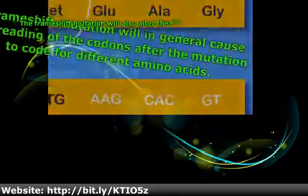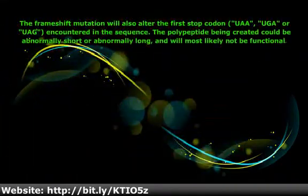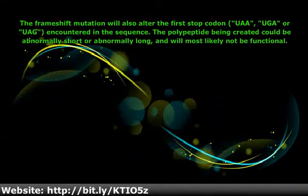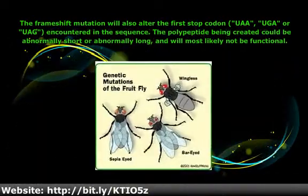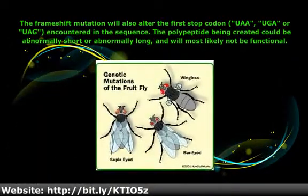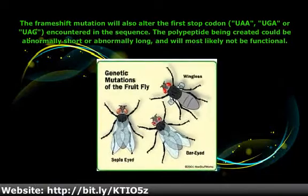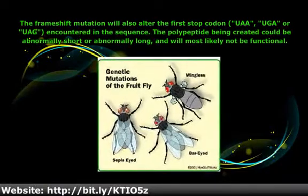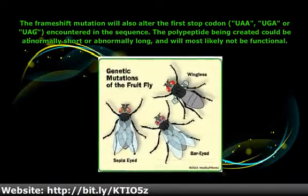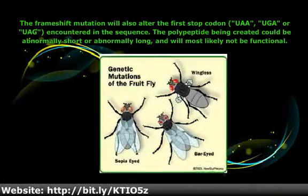The frameshift mutation will also alter the first stop codon — UAA, UGA, or UAG — encountered in the sequence. The polypeptide being created could be abnormally short or abnormally long, and will most likely not be functional.